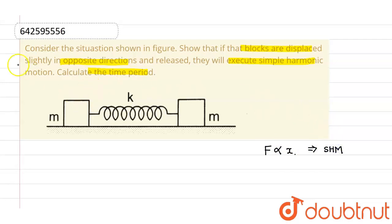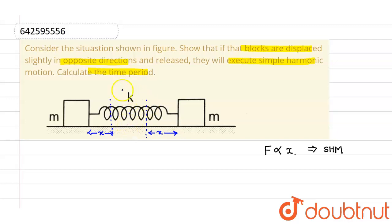Let the block m on the left be displaced to the right by a displacement x, and the block on the right be displaced by a displacement x to the left side. The blocks will be somewhere here. The center of mass will not move from its initial position as no external force is present.